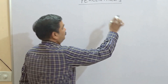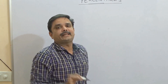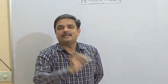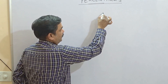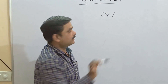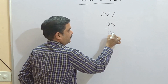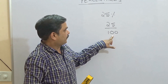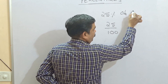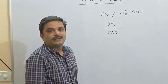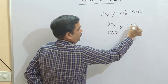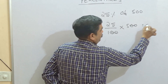Let us begin the chapter. The very meaning of 'percent' is per hundred — on every hundred is called percent. For example, 25 percent means 25 upon 100. If you want to find 25 percent of 500, simply calculate 25/100 × 500, which gives 125.